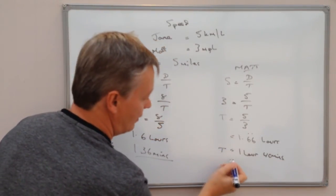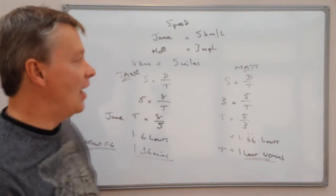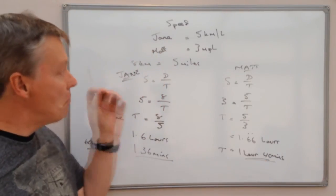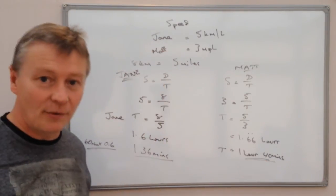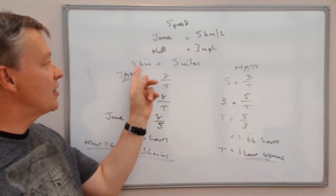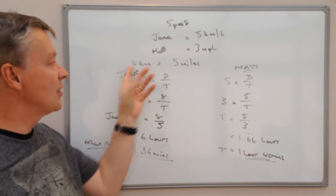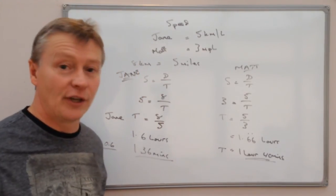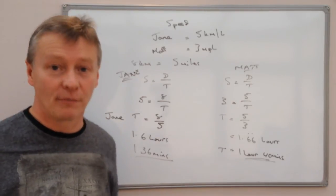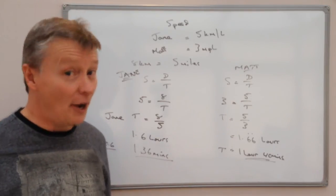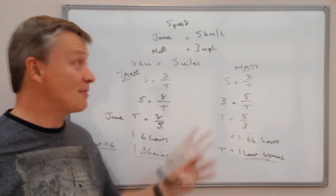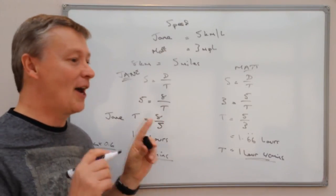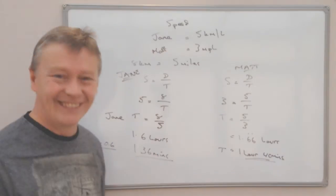That's Matt's time. The main key with these types of questions is to convert using 8 kilometres equals 5 miles, along with the other conversion units covered in the playlists. That's been 3 Minute Maths on converting units in average speed.